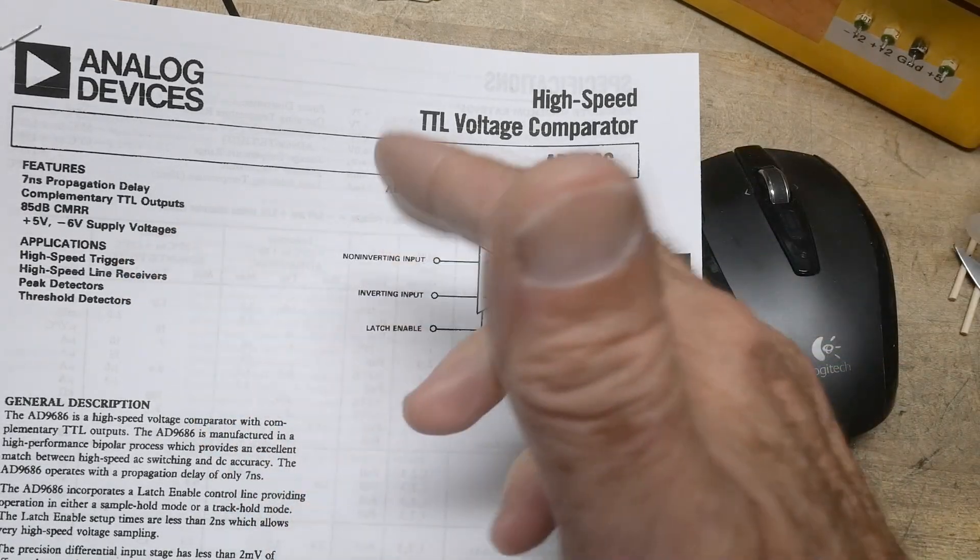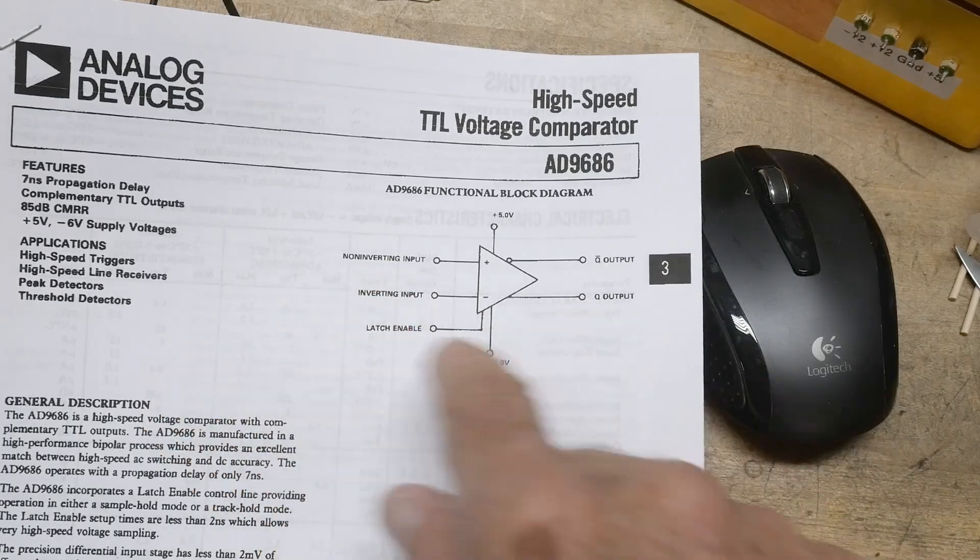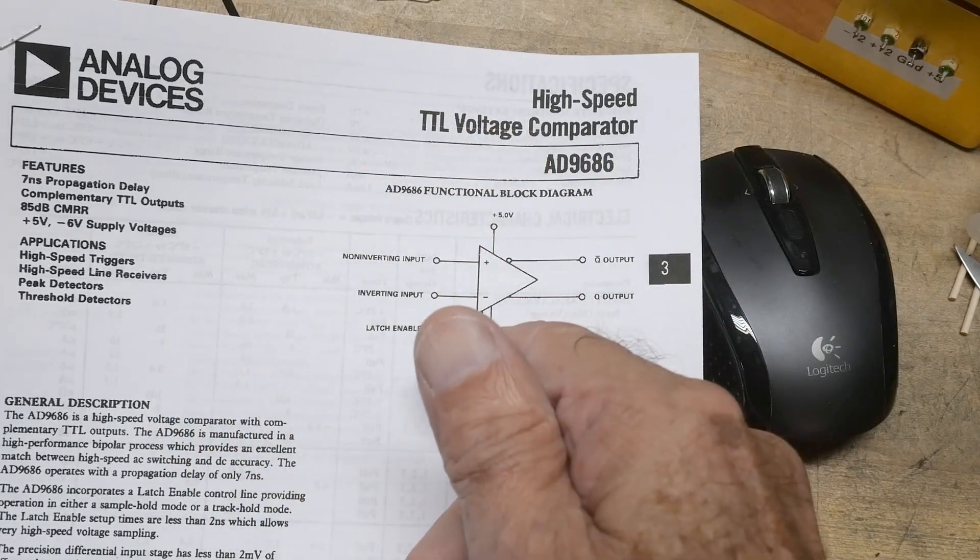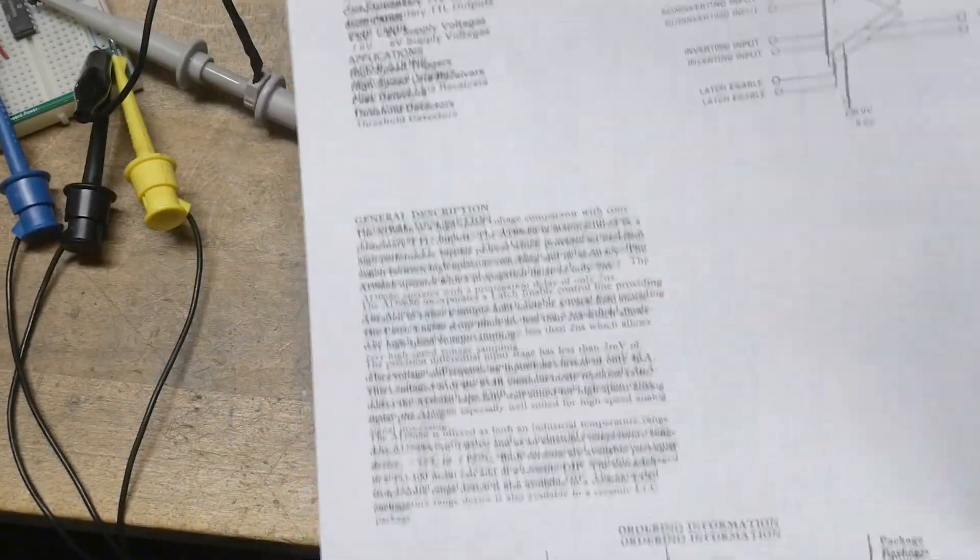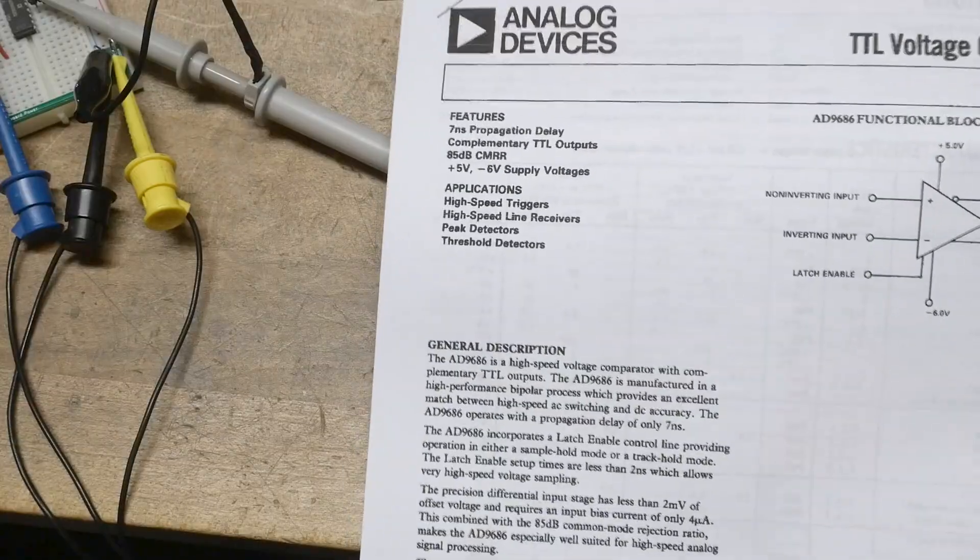And then the latch you can turn on and off the transmission of the circuit. So if you have the latch enabled pulled low, then it's transparent. And then if you bring it high, it remembers the last data and stays there. All right. So let's see here. What does it say?